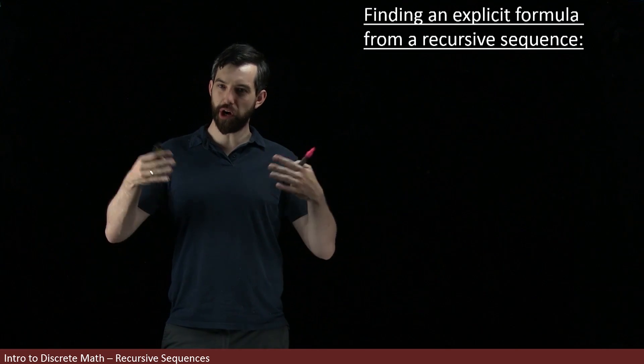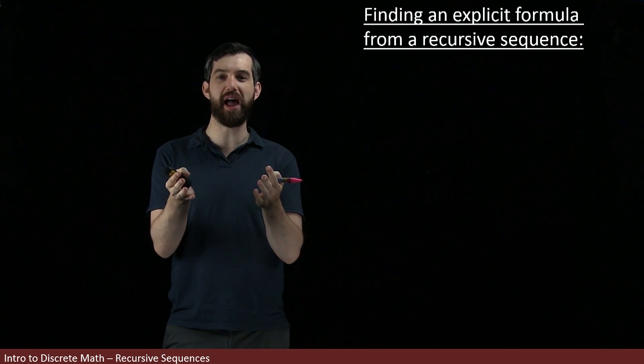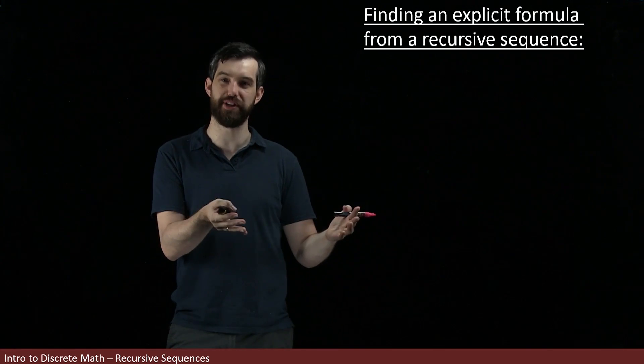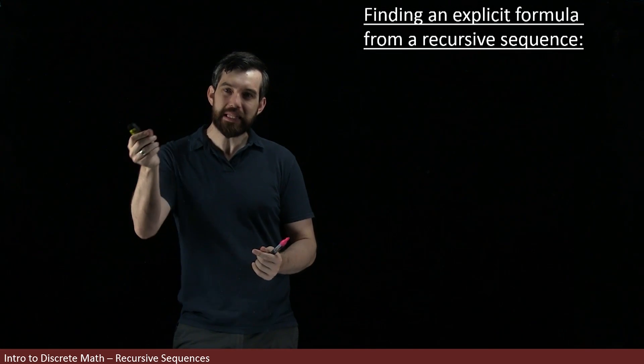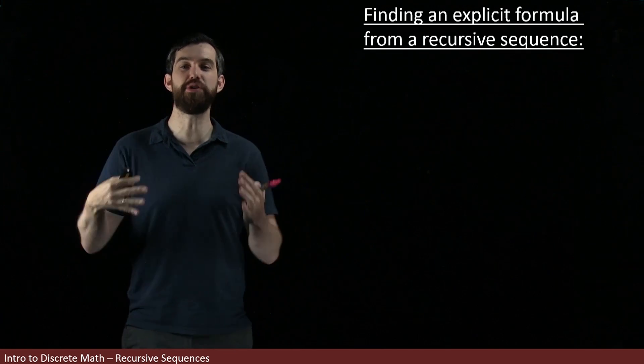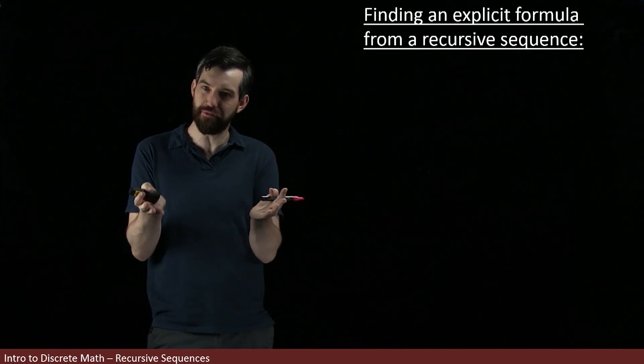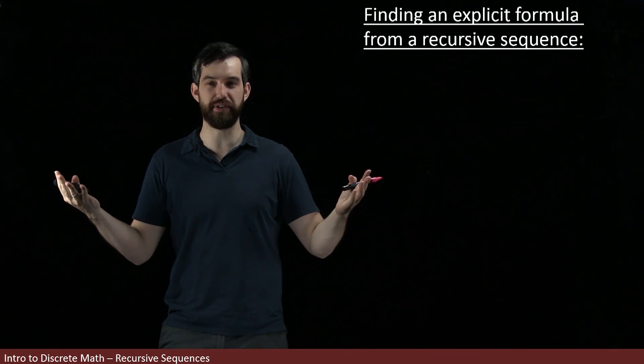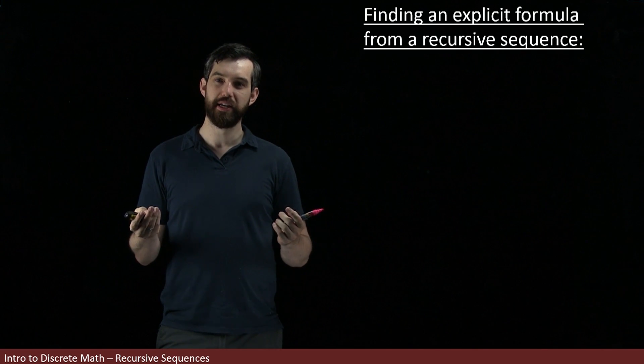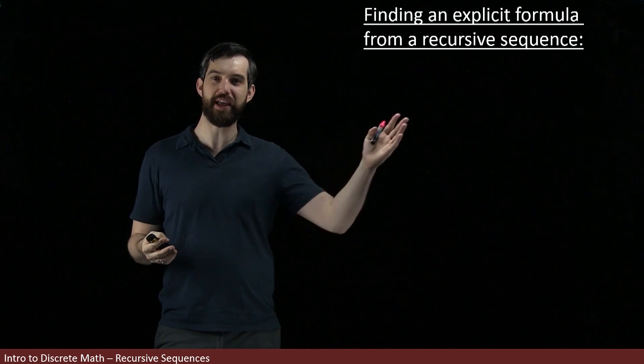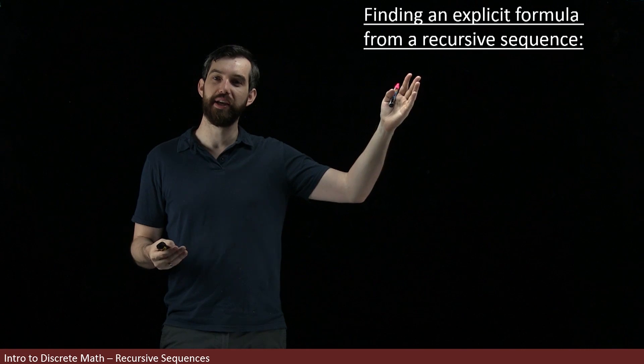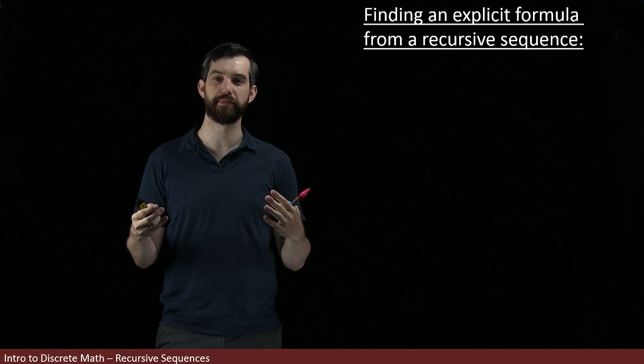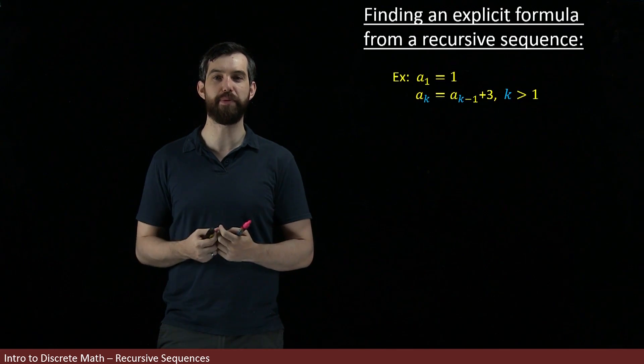If a recursive formula is one that says Ak is defined in terms of previous terms like Ak-1, Ak-2, and so on, then an explicit formula is one that doesn't reference any other terms. The only thing it references is that value k. It's Ak is some function of k, like k squared or k factorial. So one of the goals that we have is if I have a recursive sequence, can I find an explicit formula for it that is not recursive?